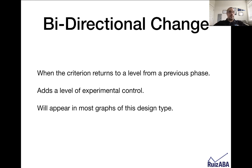An added element to that is called bidirectional change. Bidirectional change is when the criterion returns to a level from a previous phase, and you can do this to really strengthen your argument — it adds a level of experimental control. Most of the time when you see a changing criterion design, you'll see the bidirectional change occur. The graph I'm going to show you on the next slide actually has that present.